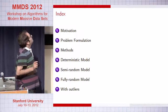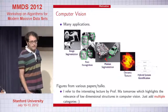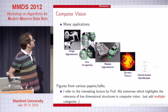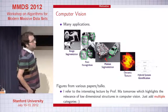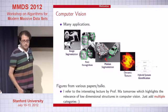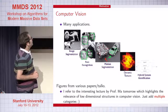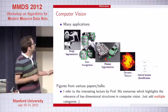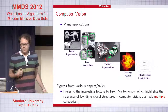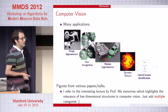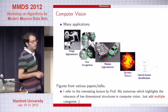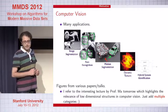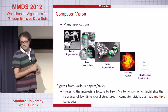Let me motivate this problem quickly. There are a lot of applications coming from computer vision. I'm not going to have time to go into the details, but I refer you to Professor Ma, who is speaking tomorrow. You will see the relevance of low dimensional structures in computer vision, and if you add multiple categories, you get to this problem.